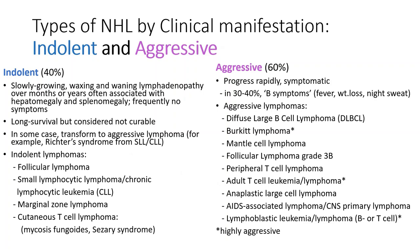Clinically, it's easy to divide lymphomas into indolent and aggressive. Indolent lymphomas grow slowly; their lymphadenopathy waxes and wanes over months or years. In some cases, they transform to aggressive lymphoma. Indolent lymphomas include follicular lymphoma, small lymphocytic lymphoma, marginal zone lymphoma, and cutaneous T cell lymphomas.